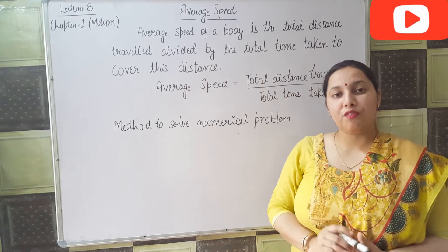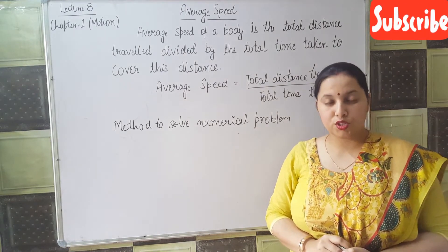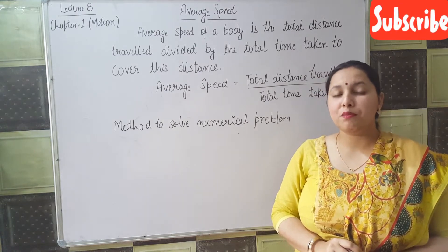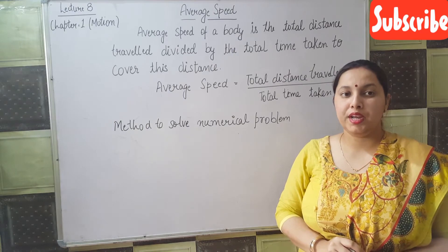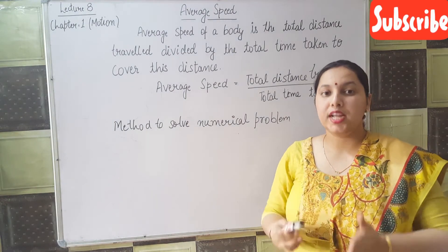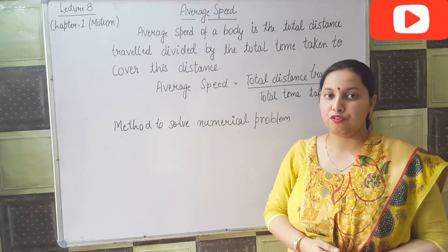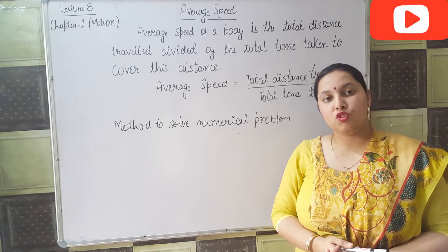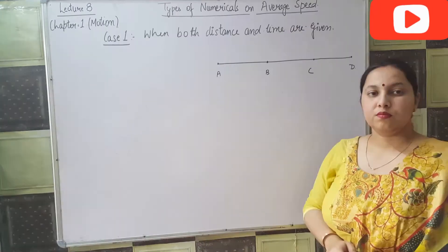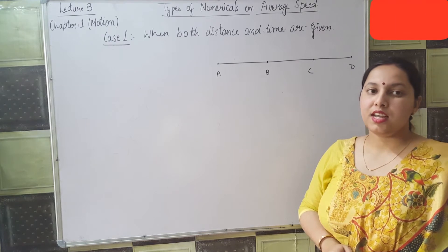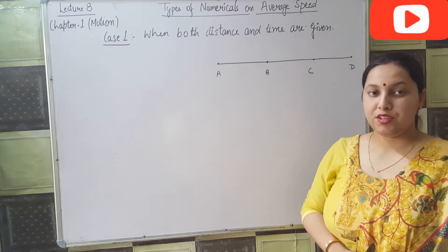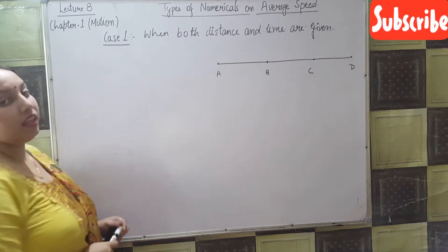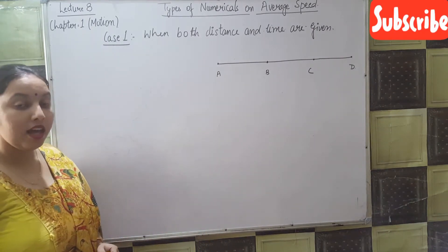The concept of average speed can be used for uniform motion as well as non-uniform motion. Now it is time to solve some numerical problems on average speed. We have different methods to solve numerical problems on average speed. The very first case is when both distance and time are given. Then how do we find the average speed?